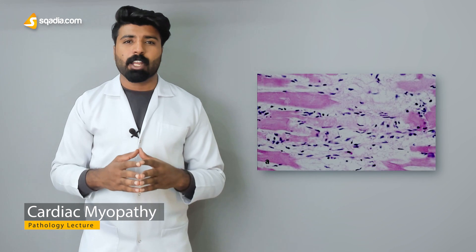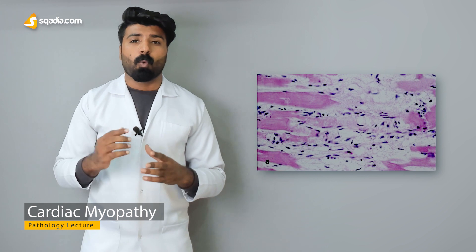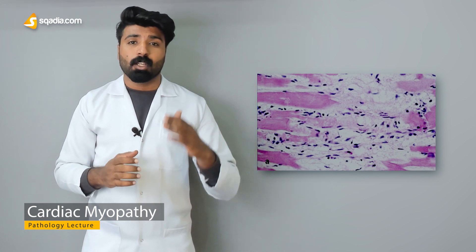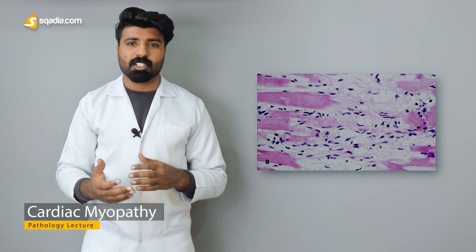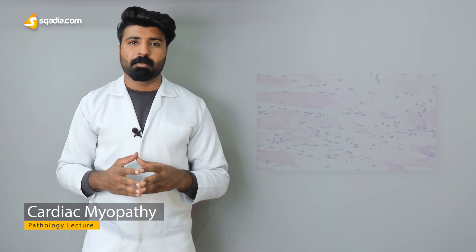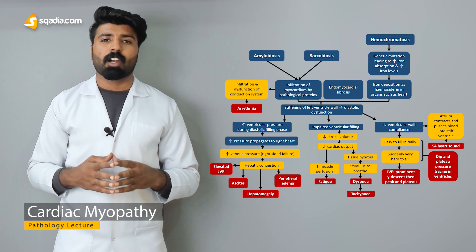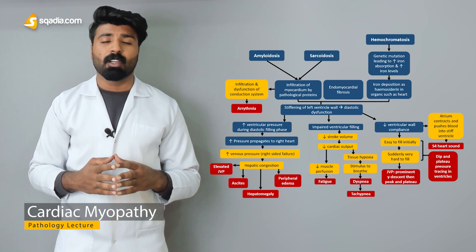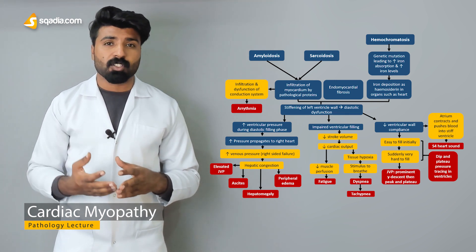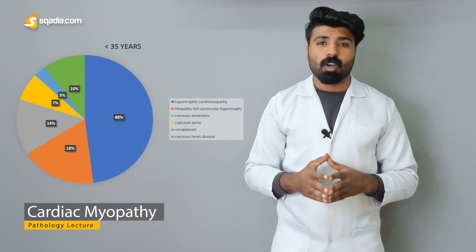We'll then cover arrhythmogenic cardiomyopathy — what pathology leads to it, what the basic underlying cause is, and what physical changes occur that lead to arrhythmia. Following that, we'll discuss restrictive cardiomyopathies, including the basic cause, how it appears on gross structure, and the clinical symptoms the patient presents with.